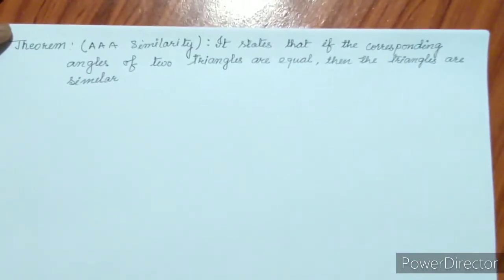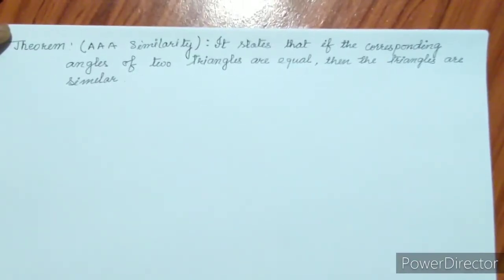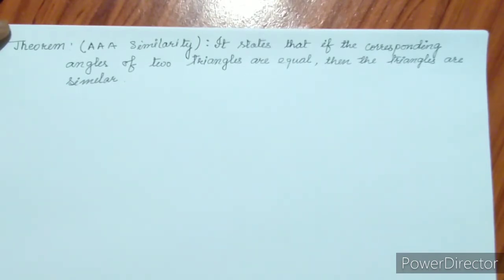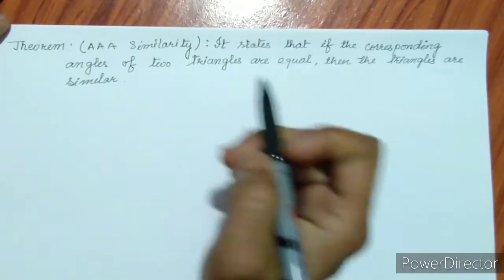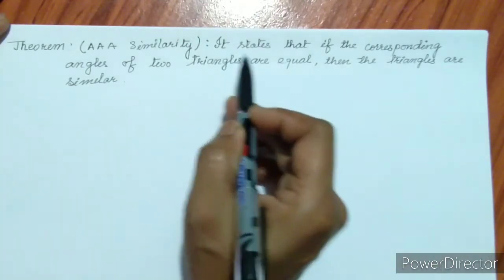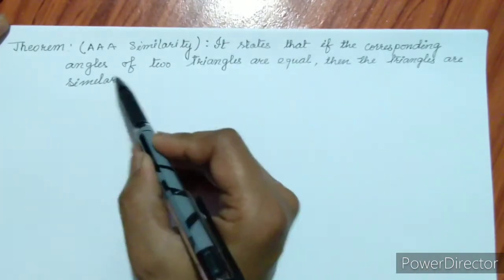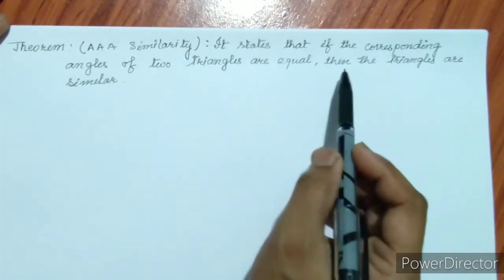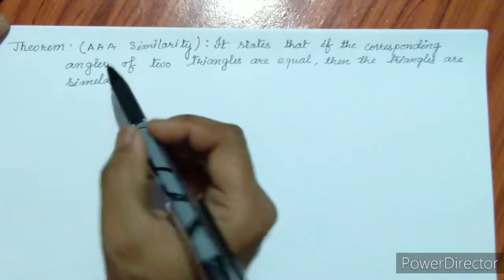Hello students of class 10. Let's see Theorem 7.4. The theorem states: if the corresponding angles of two triangles are equal, then the triangles are similar.